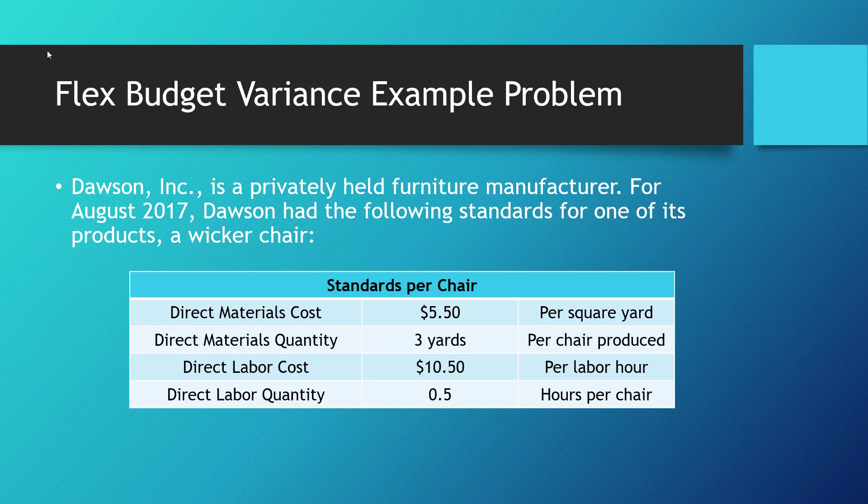Let's do an example problem for how flex budget variances can be calculated and used to make a document called a Standard Cost Income Statement. In this problem, we're going to be Dawson Incorporated, a privately held furniture manufacturer. For the month of August 2017, we had the following standards set in place for our production of wicker chairs.